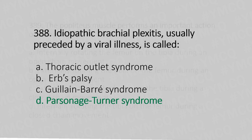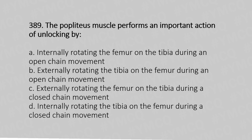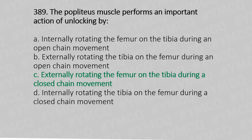Question 389: The popliteus muscle performs an important action of unlocking the knee by: Option A: externally rotating the femur on the tibia during open chain movement. Option B: internally rotating the tibia on the femur during open chain movement. Option C: externally rotating the femur on the tibia during closed chain movement. Option D: internally rotating the tibia on femur during closed chain movement. The answer is Option C: externally rotating the femur on the tibia during closed chain movement.